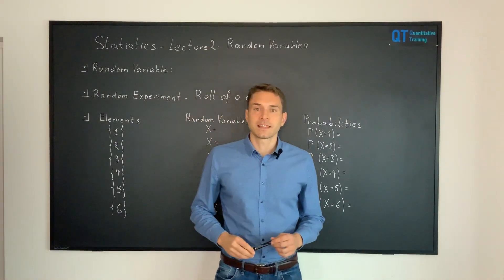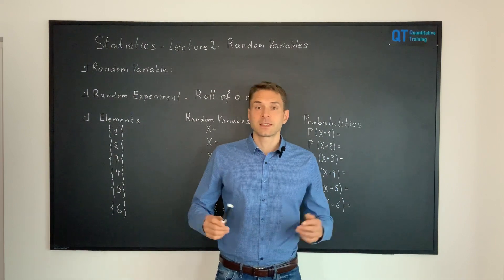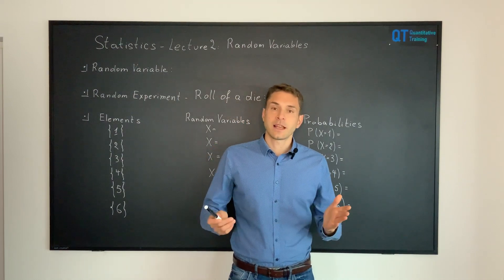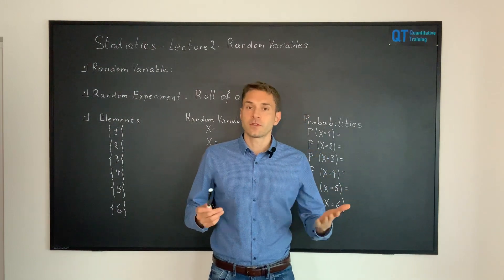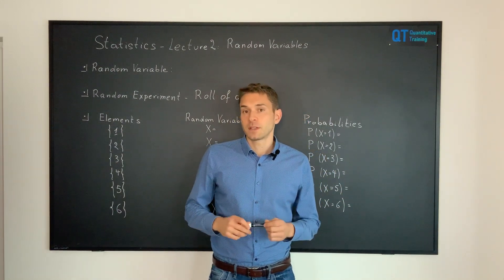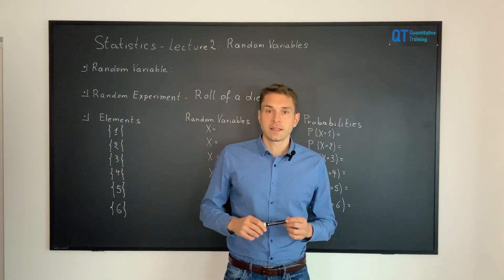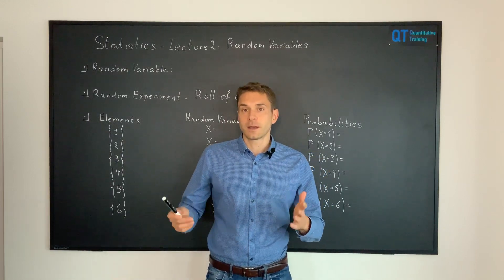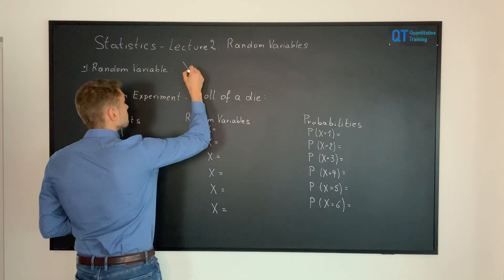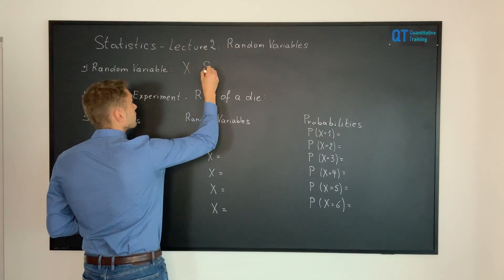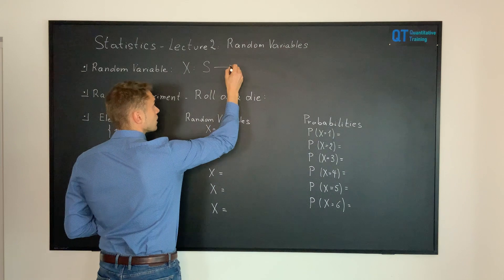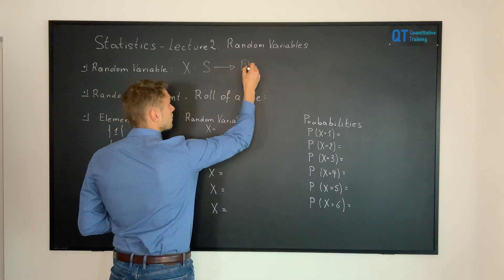Hello and welcome to the second lecture on statistics where we are going to discuss random variables. In the previous lecture we saw that random variables basically describe the mapping between some sample space and usually the space of real numbers. So we have a random variable as a mapping between some sample space S going into the space of real numbers R.